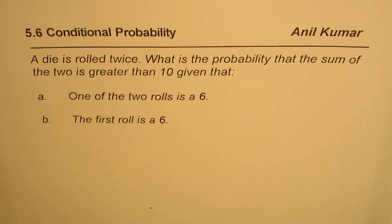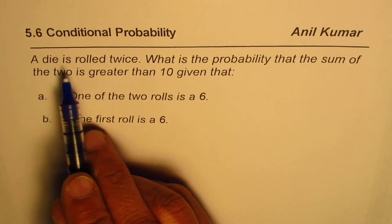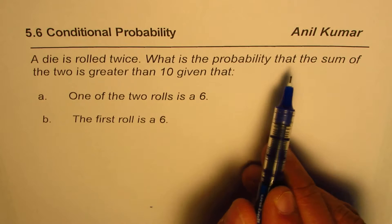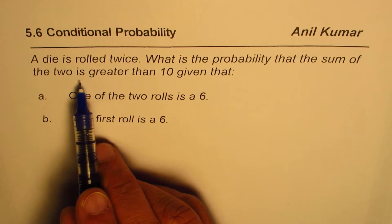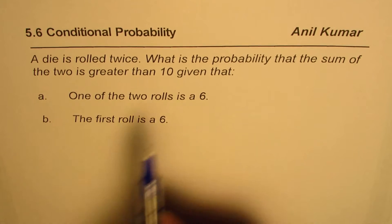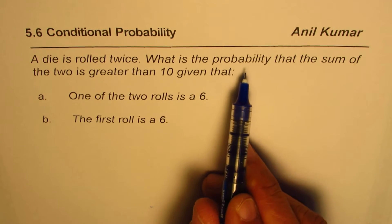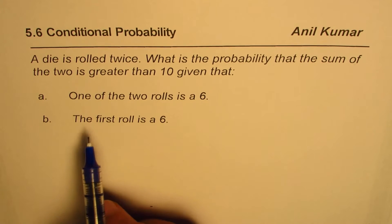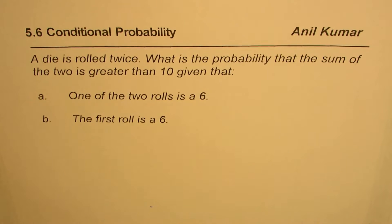I'm Adil Kumar and in this video we'll try to understand the concept of conditional probability. Conditional probability means that we are finding the probability of an event where something else has already happened. Let's look into this question: a die is rolled twice. What is the probability that the sum of the two rolls is greater than 10, given that one of the two rolls is a 6? The second question: what is the probability that the sum is greater than 10, given that the first roll is a 6?